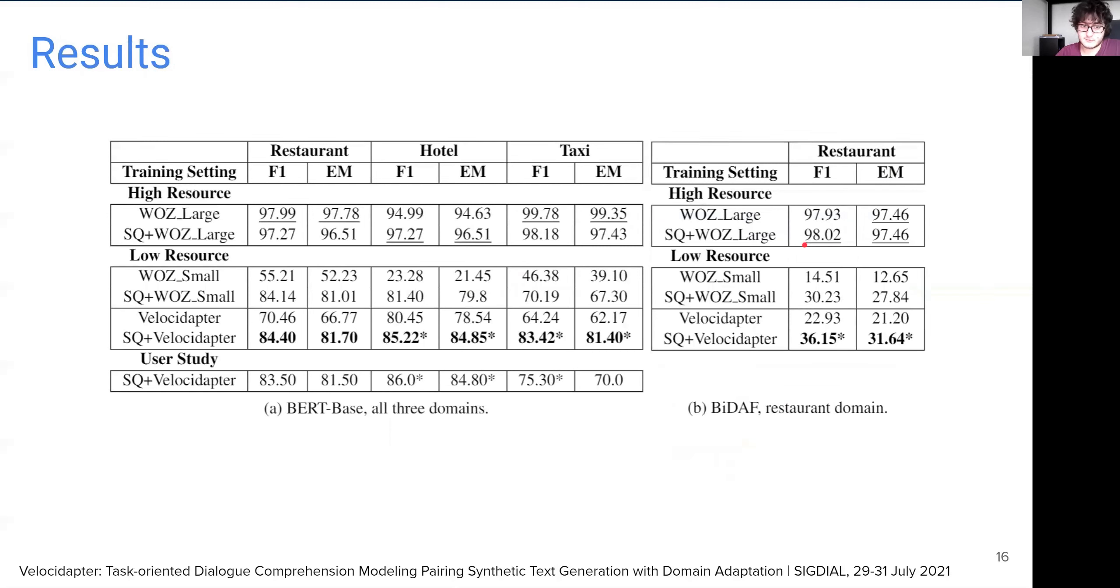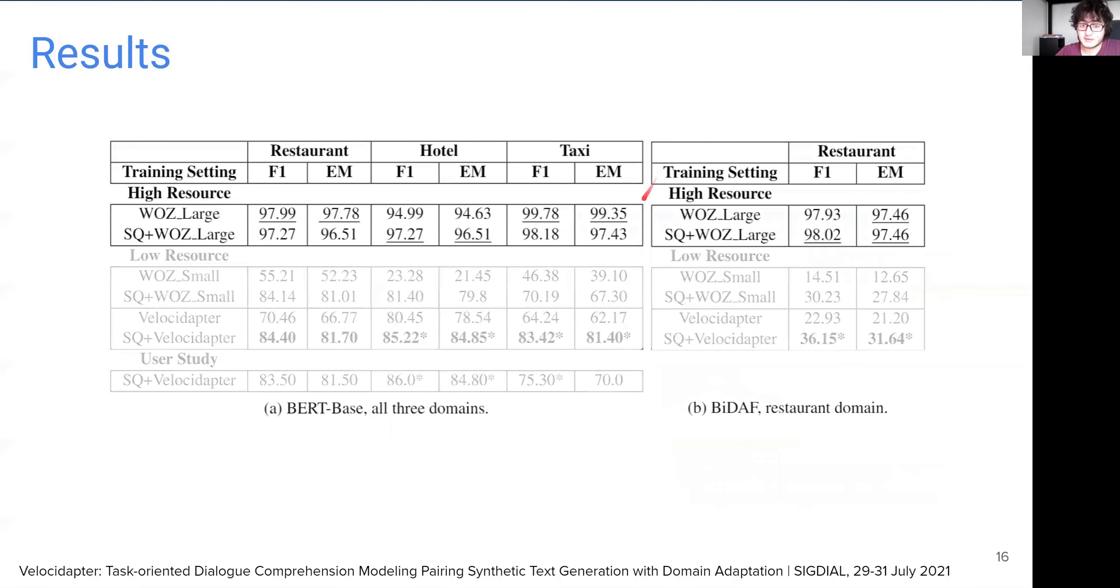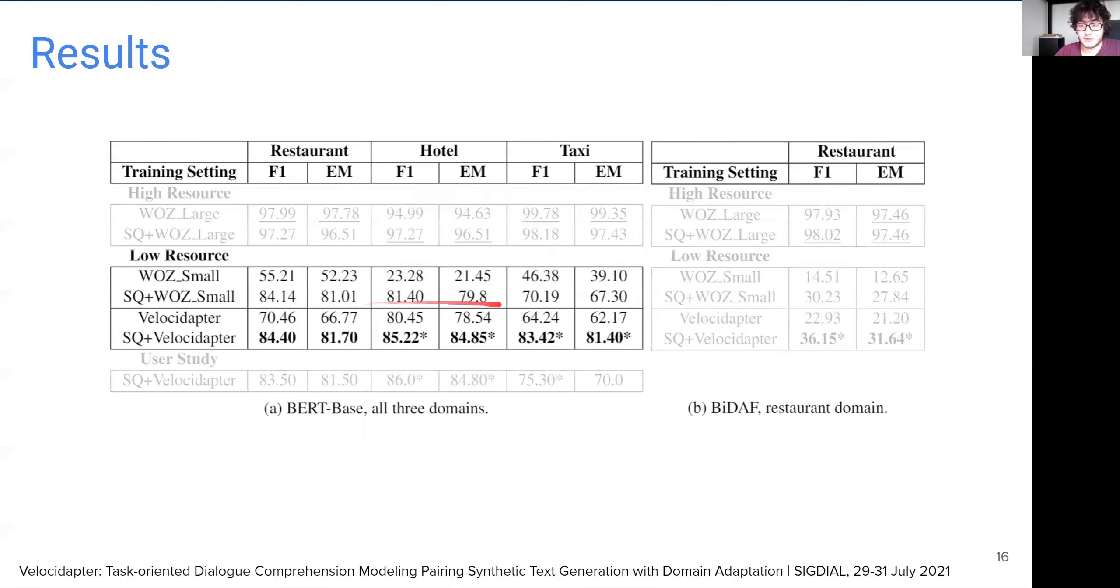Here are the results averaged over 10 runs. For each column, underlined numbers indicate best results in the high resource setting, whereas bold numbers indicate best results in low resource setting. The asterisk shows the results are significant compared to the baseline trained under the same setting. The results from BERT experiments suggest that both with and without SQuAD pretraining our framework outperforms base models in all three domains in a low resource setting. We also note that improvements show discrepancies over different domains. And we believe this is due to the out-of-vocabulary challenge being a more significant problem for some domains. Our framework, because it enriches dialogues with diverse slot values, is able to show stronger improvements on such domains.